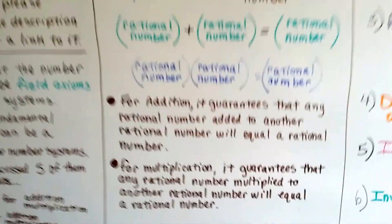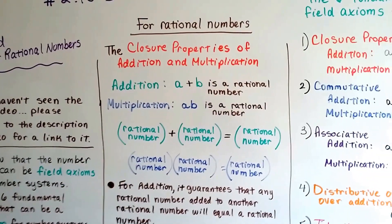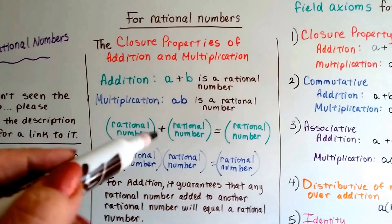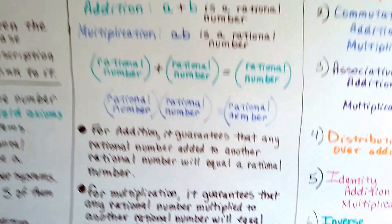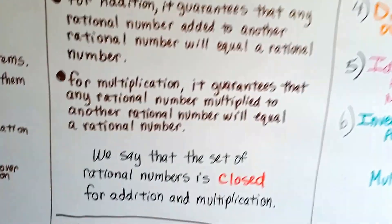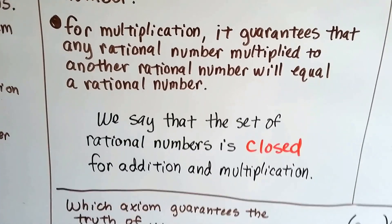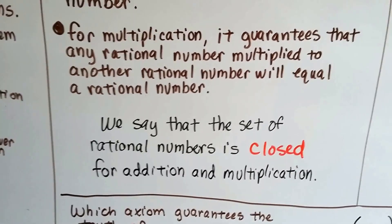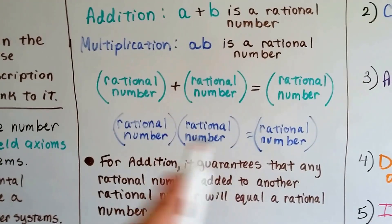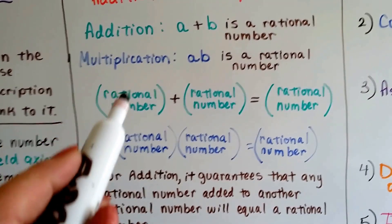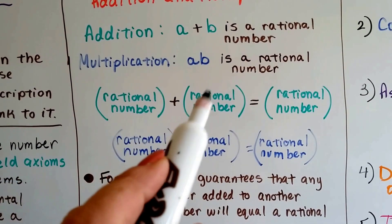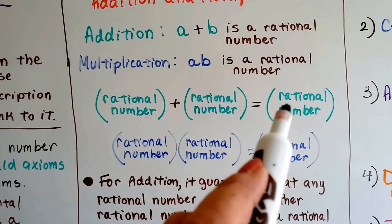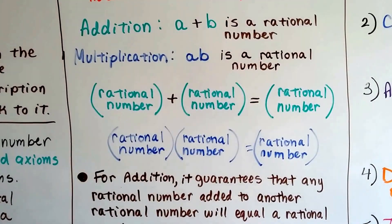Now, if this was the closure property of addition and multiplication for real numbers, then we'd have the word 'real numbers' written in here. We say the set of rational numbers is closed for addition and multiplication, because these will be true. If we have one-third plus one-third, which are both rational numbers, our answer is going to be two-thirds, and that's a rational number.